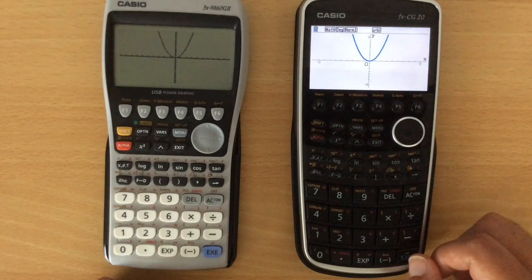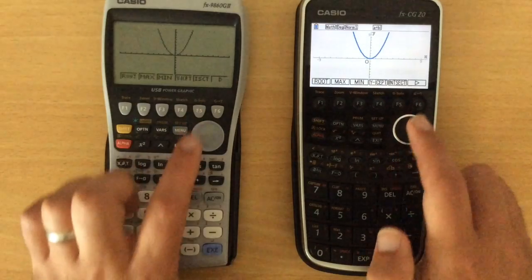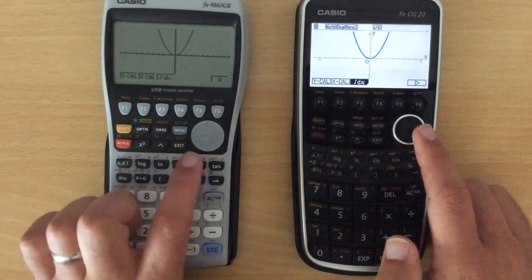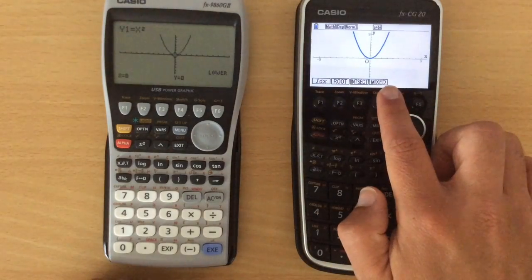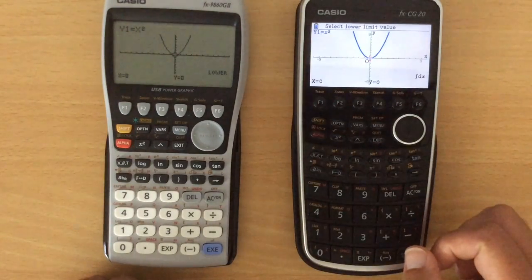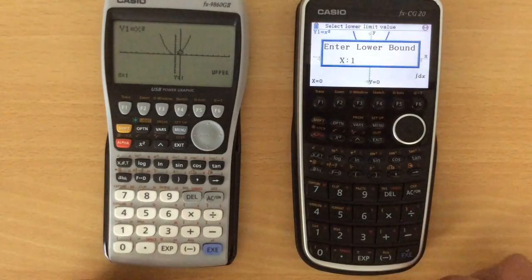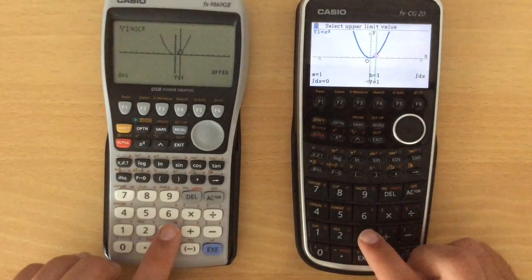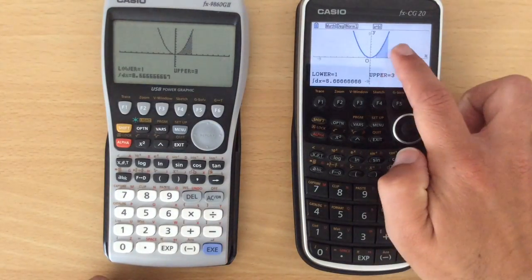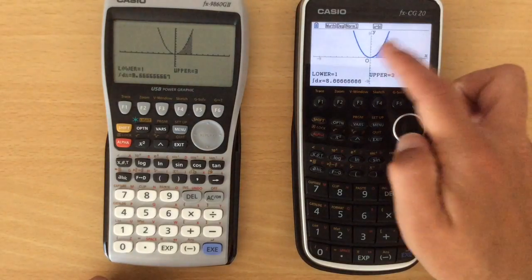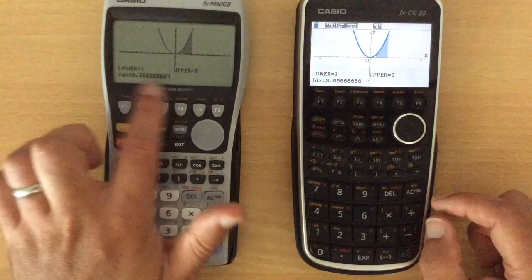Now what I was talking about with the integration, if we go graph solve, next menu, integrate, we've got other options that appear in this one. Let's choose that integrate mode, and we're going to integrate from one to three. This will draw that little bit of a graph. It's not a major difference, but it's quite nice. Again, this is just finding a numerical version, finding the same thing there.